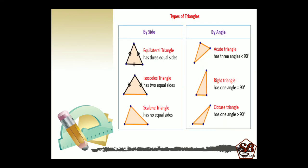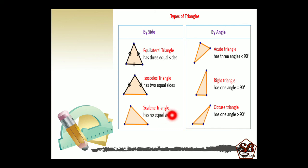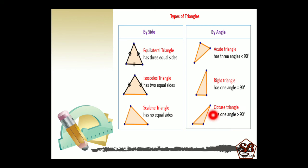Here is a quick revision of what we have just learned. Types of triangles. By side: equilateral triangle has three equal sides; isosceles triangle has two equal sides; scalene triangle has no equal sides. Based on their angles: acute triangle has three angles less than 90 degrees; right triangle has one angle equal to 90 degrees; and obtuse triangle has one angle greater than 90 degrees.